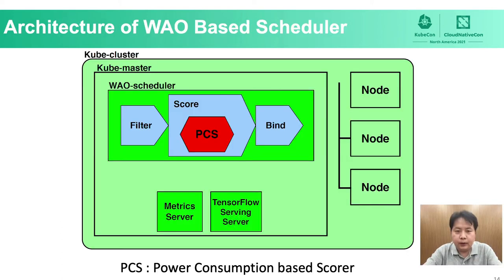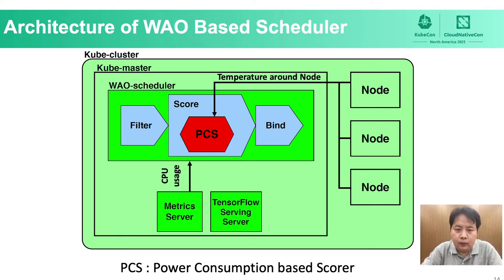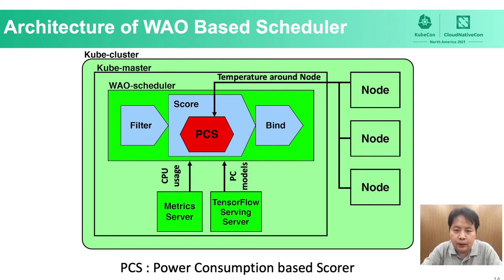Now I will explain the architecture of WoW Scheduler, especially the Power Consumption Score, PCS. After taking the available nodes list from the filter phase, PCS first collects information on each node — for example, resource usage such as CPU usage in the Kubernetes cluster aggregated by the metrics server, and temperature around the node. After collecting this information, PCS predicts the increase of power consumption of each node using a TensorFlow Serving server. Finally, PCS scores each node using the predicted power consumption increase and determines the optimal node for pod allocation, enabling WoW Scheduler to perform pod allocation considering power consumption.